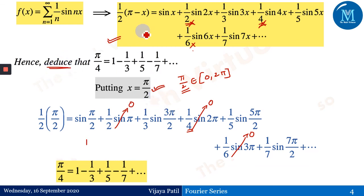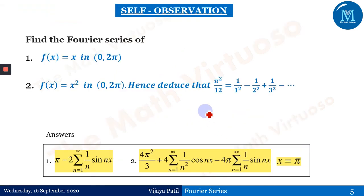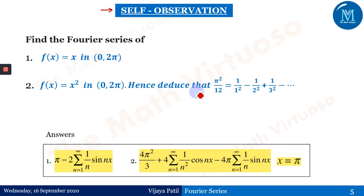It is always good to write the series in expanded form so you can easily identify which value of x to substitute to obtain a particular deduction. The self-observation slide provides two practice questions: f(x) = x and f(x) = x², both on the interval 0 to 2π. A few more sessions will cover different varieties of 0 to 2π problems. Thank you, happy learning.